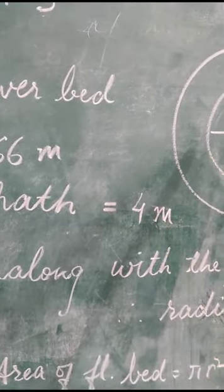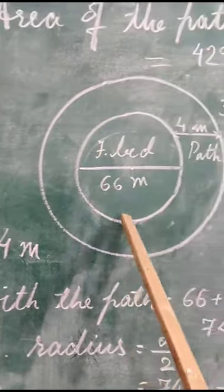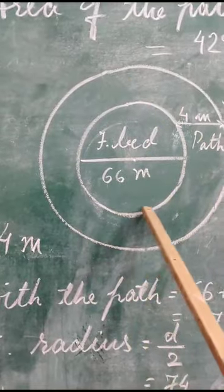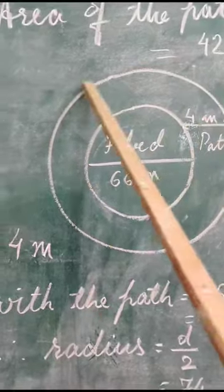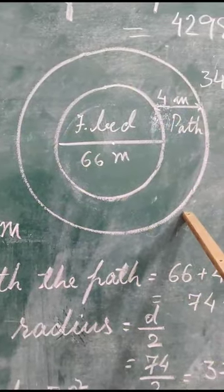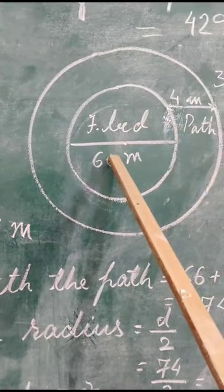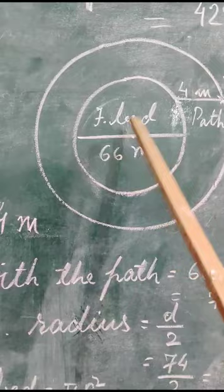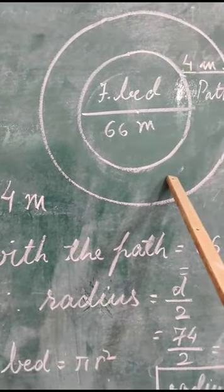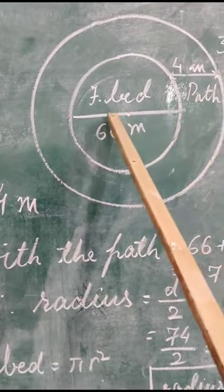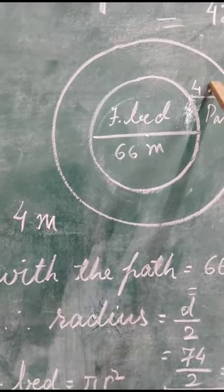Now, what will we do? You have to find out the area of this path outside the flower bed. So what will you do? Just find out the area of this full circle along with the flower bed—path plus flower bed. And then you find out the area of the flower bed. And last, you will get the area of the path by subtracting the area of the flower bed from the area of the flower bed along with the path.